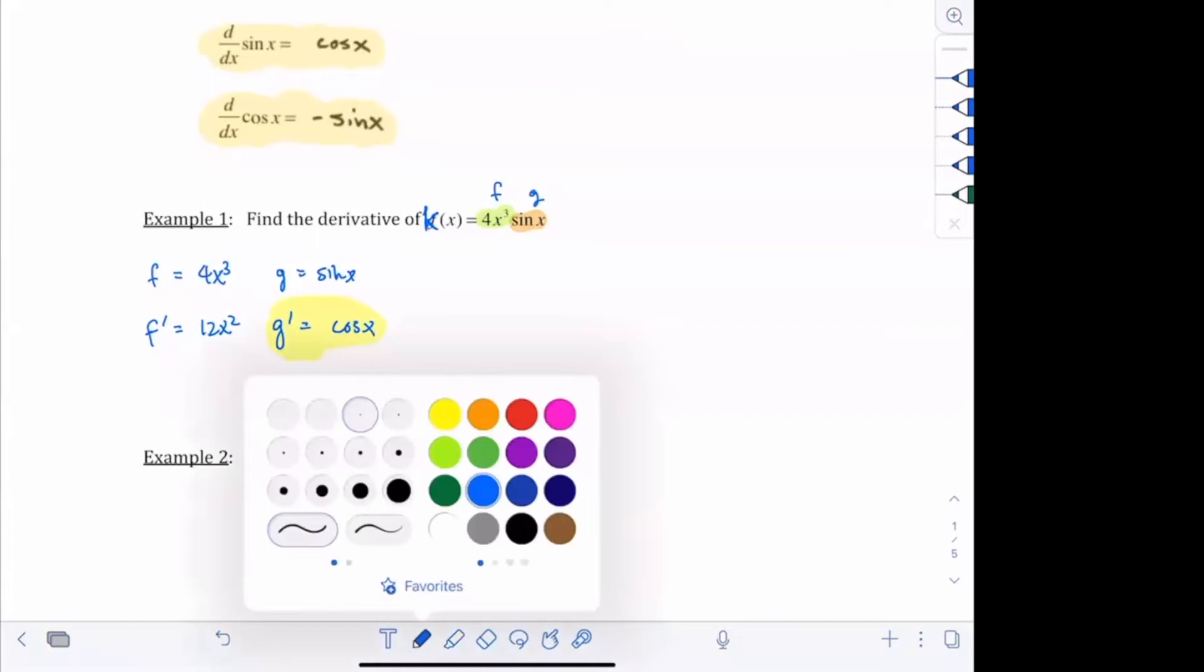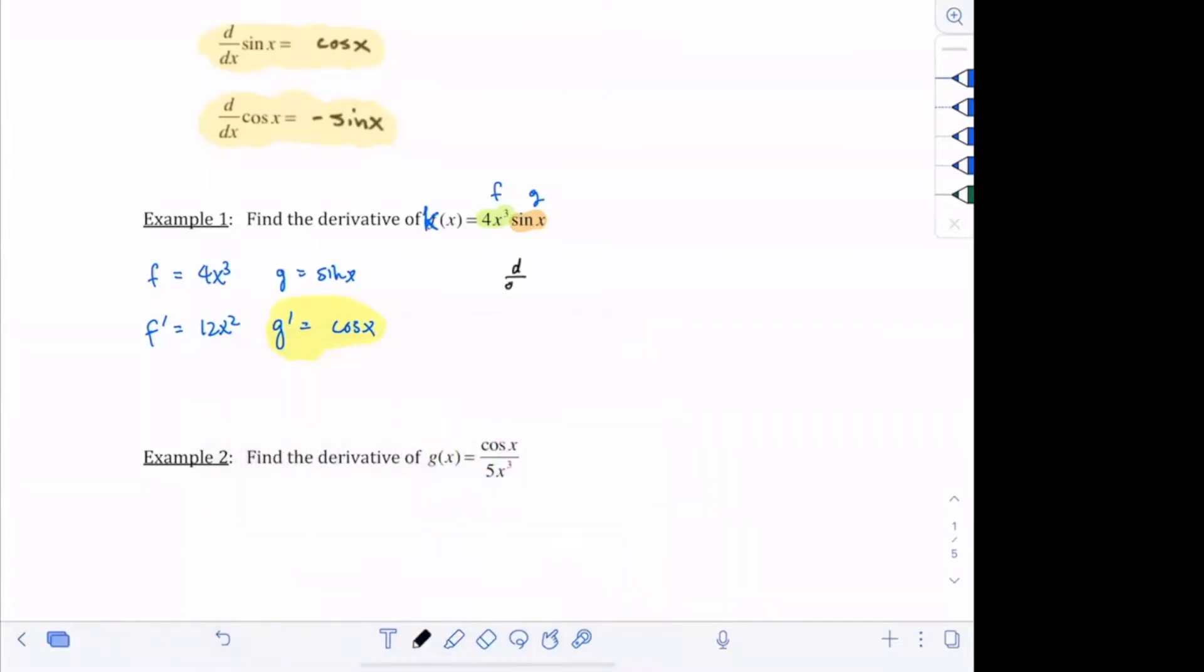So we can write out what our product rule is. The derivative of a product fg is equal to f prime g plus g prime f. And then we're just going to write in the relevant pieces. So this is going to be 12x squared times sine of x plus cosine of x times 4x cubed.